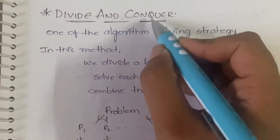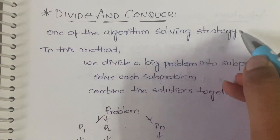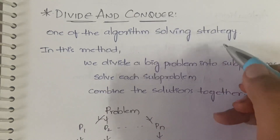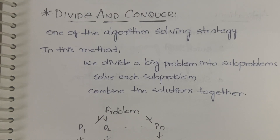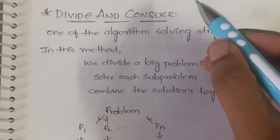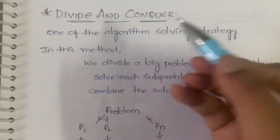Divide and conquer is one of the algorithm-solving strategies. In algorithm-solving strategies we have different methods like greedy method, branch and bound, divide and conquer, backtracking, and so many more. Among all those methods, divide and conquer is one of them.